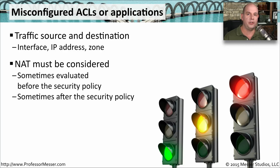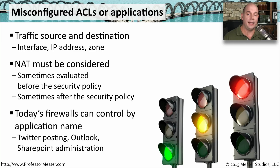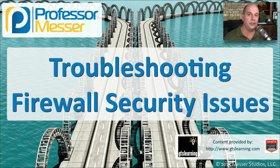You also have to consider, especially for firewalls in layer three mode, whether network address translation is enabled and how the firewall handles performing the NAT. Does it evaluate traffic prior to performing the network address translation, or does it perform the translation first and then evaluate through your security rules? You'll have to check with the manufacturer to determine how it's handled on that particular device. Some firewalls are smart enough to recognize exactly what application is being used — they don't need an IP address or port number, and can identify if someone's posting to Twitter or using administrative functions of SharePoint, allowing or denying traffic based on application criteria.